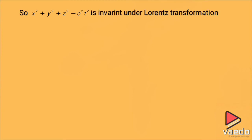We can now state that x² + y² + z² − c²t² is invariant under Lorentz transformation, since the S and S' coordinate values yield the same result. This is the invariant property of the Lorentz transformation.